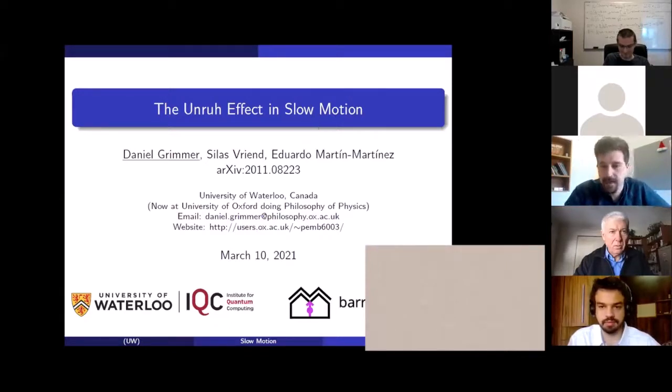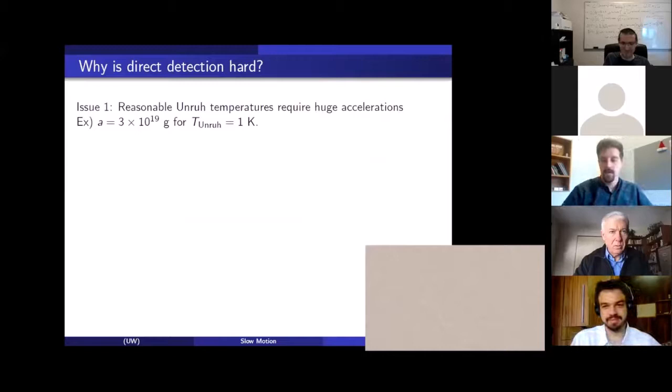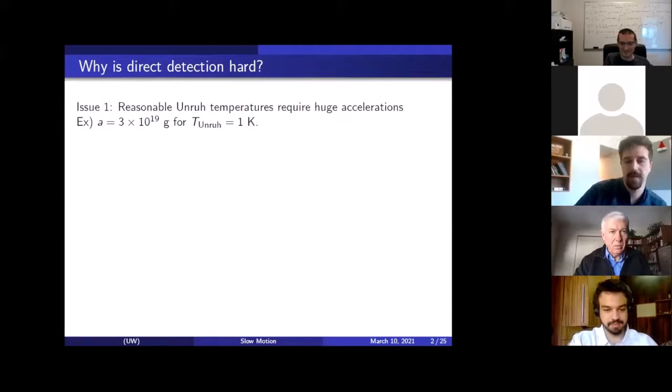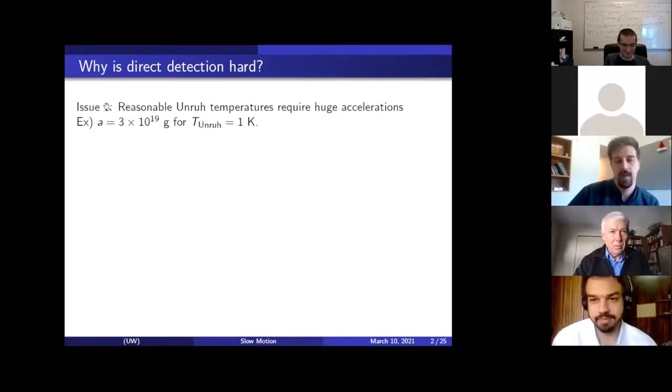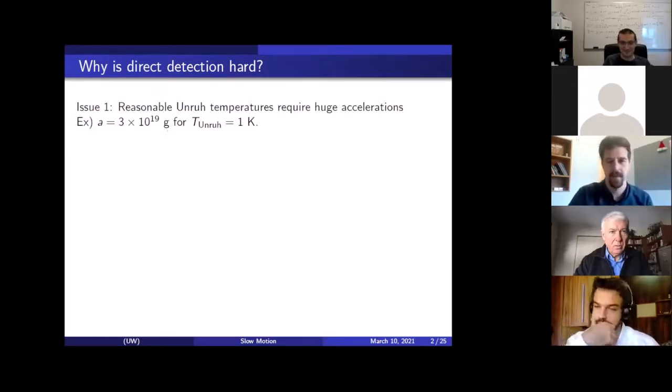So let's just jump into it. I'll be telling you about the Unruh effect in slow motion. Rob already introduced the Unruh effect and I think we all know quite a lot about it, so I don't feel the need to introduce it. But why is direct detection hard? What I'm going to be talking about today is a setup on which you could build an experimental proposal to measure the Unruh effect. But there's some theoretical interest in this setup as well.